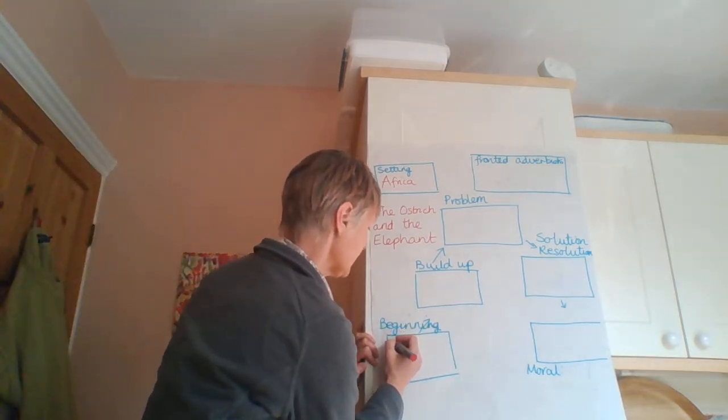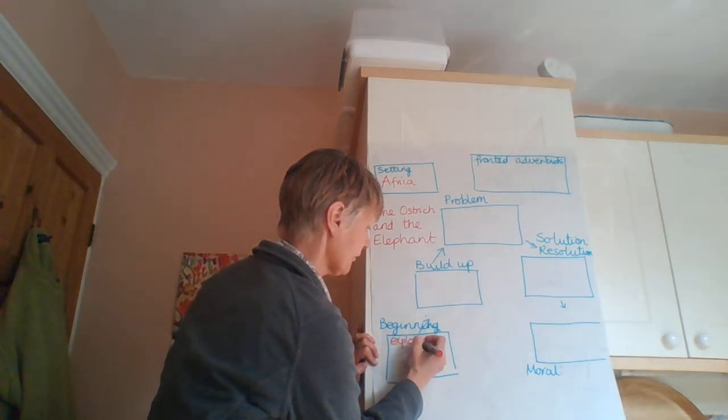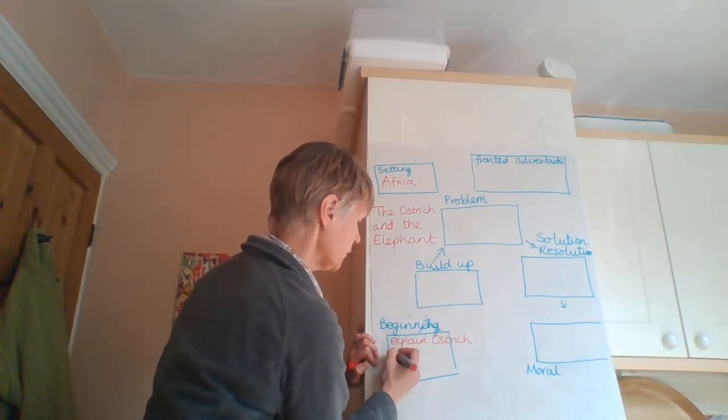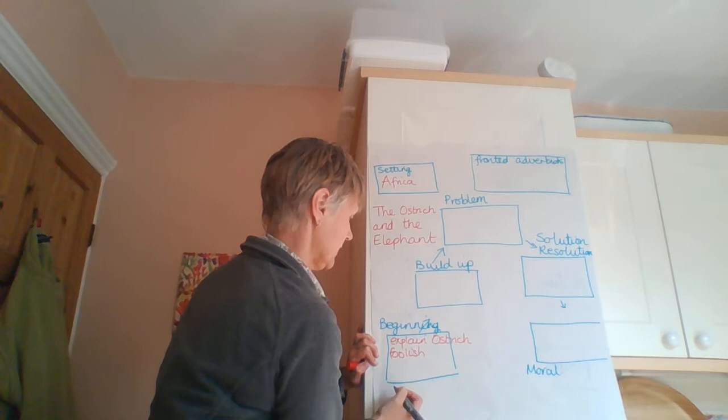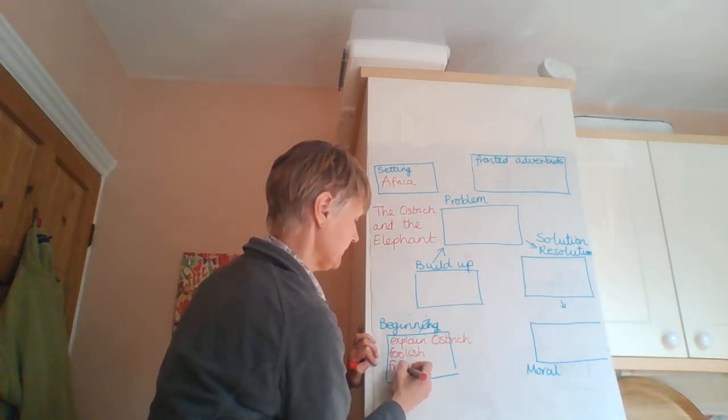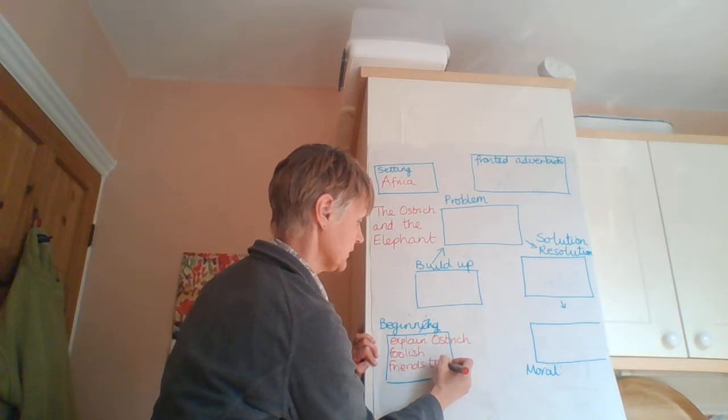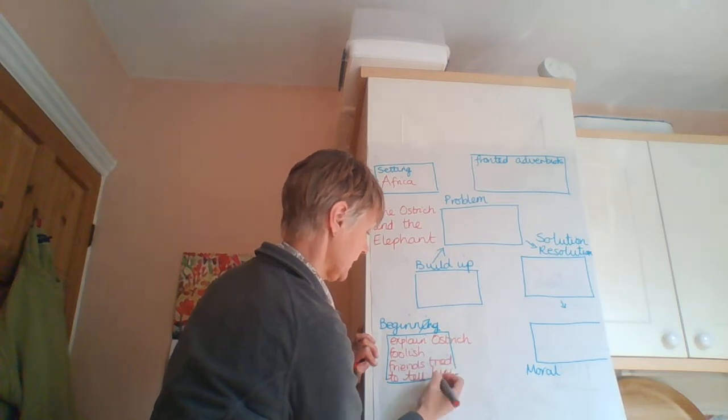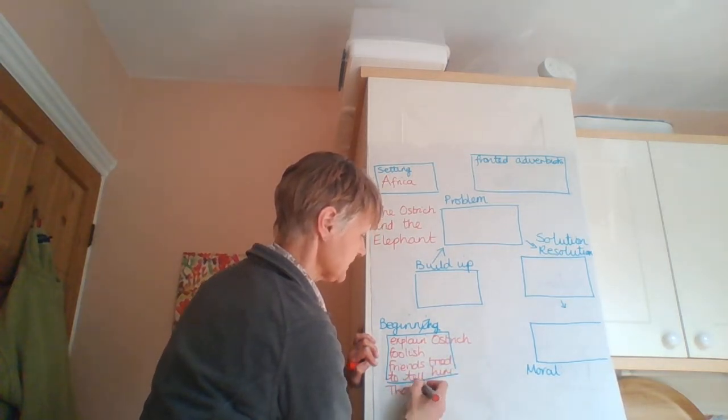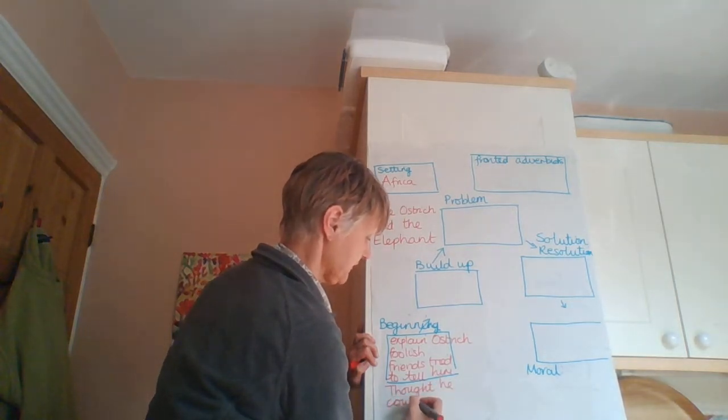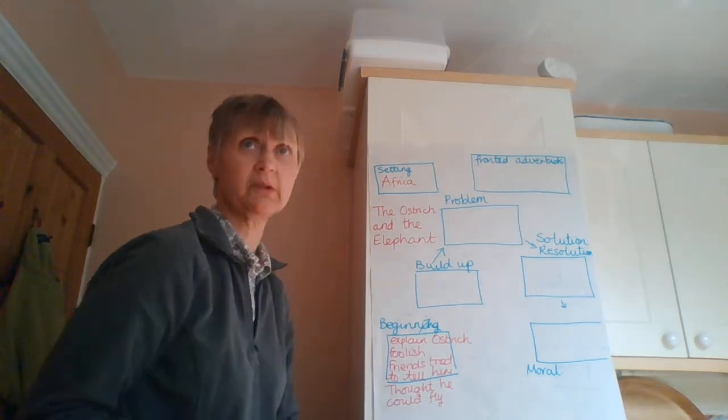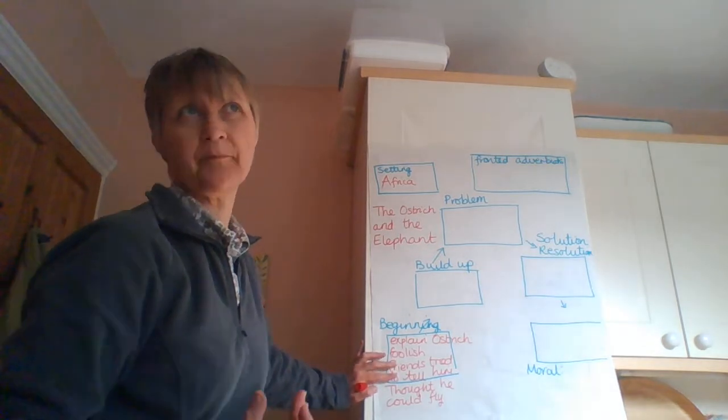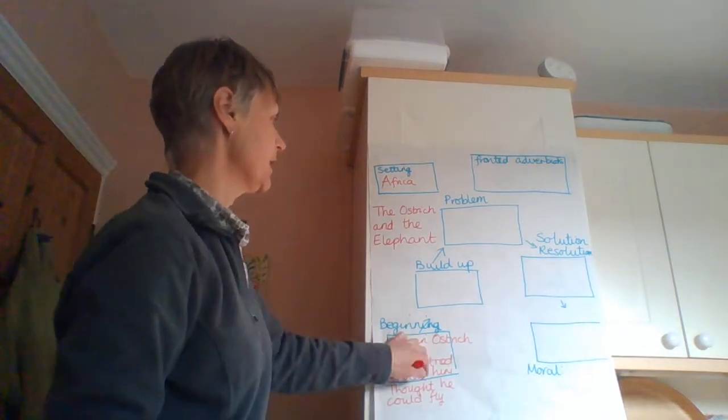Beginning. So at the beginning, I might say, I'm going to explain ostrich. This is notes, so it doesn't have to be in sentences. Explain ostrich foolish. And friends try to tell him. Friends tried to tell him. Thought he could fly. Try and keep it as neat as possible. Thought he could fly. So I've changed my one from the other day, which was about a giraffe and a hippopotamus, I think. Because I thought this one would be more, I wasn't copying one of the other ones as much. Build up.